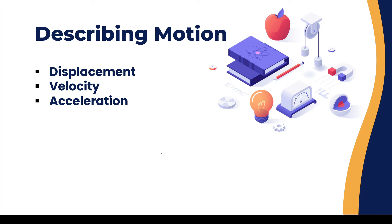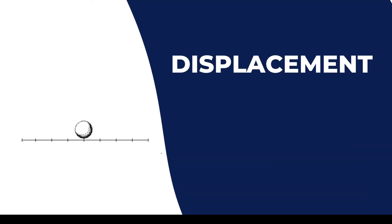We will start with displacement. If an object moves from point A to point B, we define how far it moved — to the right, left, east, west, south, or north. Let's say we have a golf ball that can go to the right or to the left. In physics, any object moving to the right is doing positive motion, and any object moving to the left is doing negative motion.